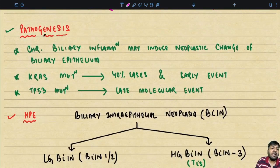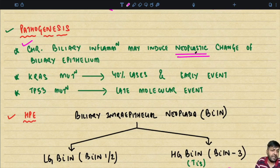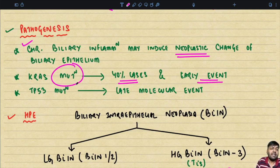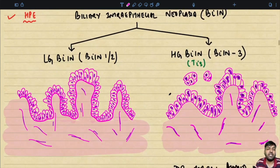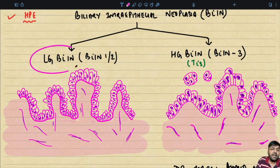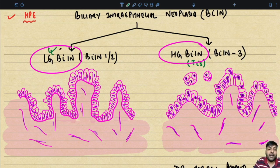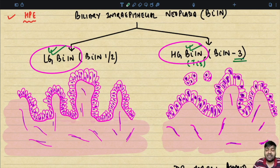Looking at the pathogenesis, chronic biliary inflammation may induce neoplastic change of the biliary epithelium. KRAS mutation is present in 40% of cases of BIN and is an early event, whereas TP53 mutation is a late molecular event. BIN lesions are classified as low-grade BIN incorporating the previous BIN 1 and 2, and high-grade BIN incorporating the previous BIN 3. Under the AJCC 8th edition staging, high-grade BIN is incorporated under carcinoma in situ.